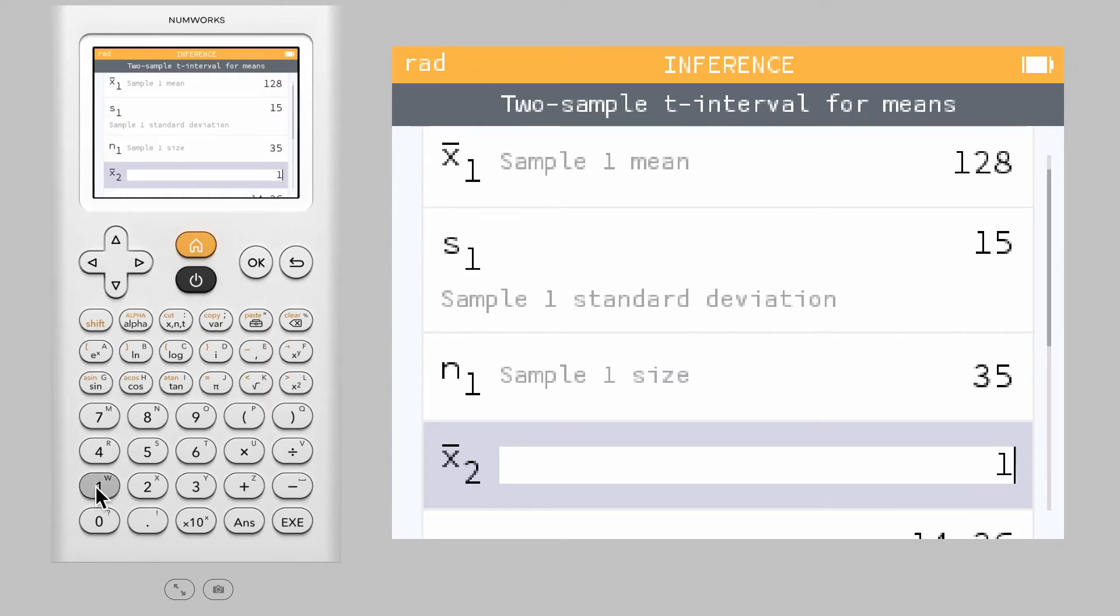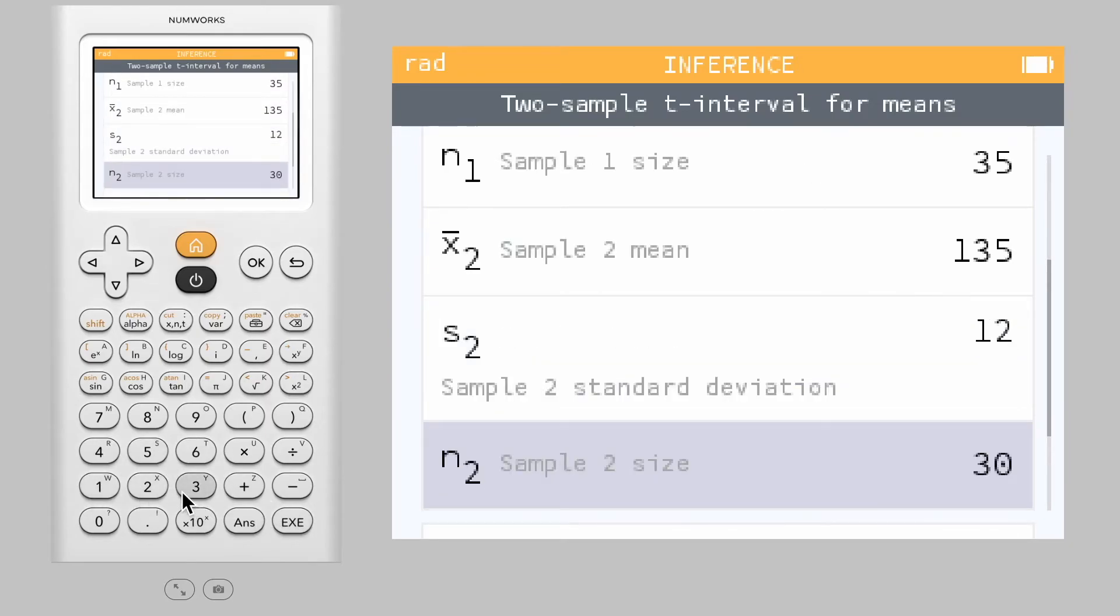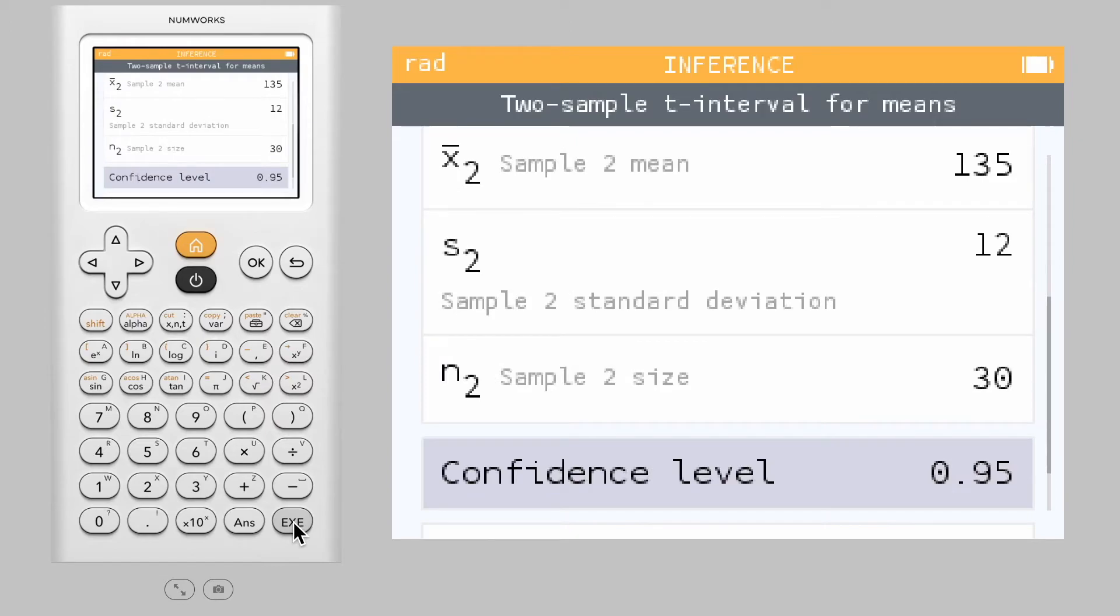And a sample mean of 135, standard deviation of 12, and sample size of 30 for the second sample.